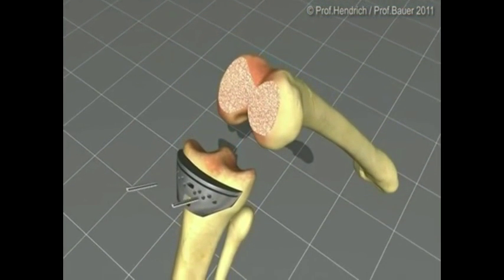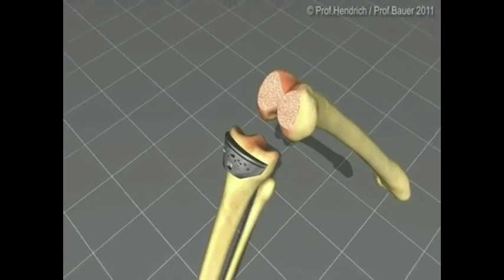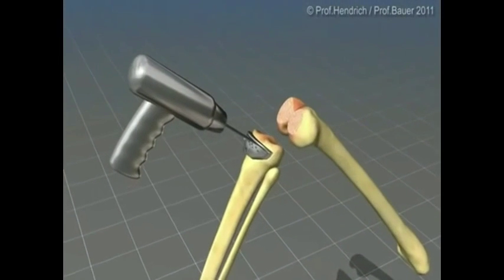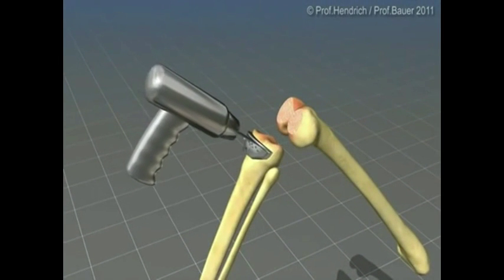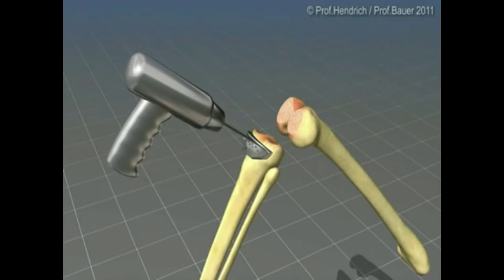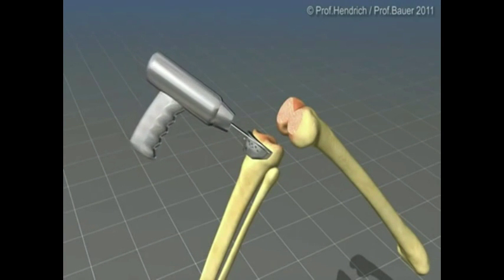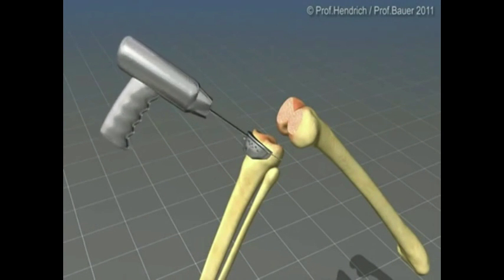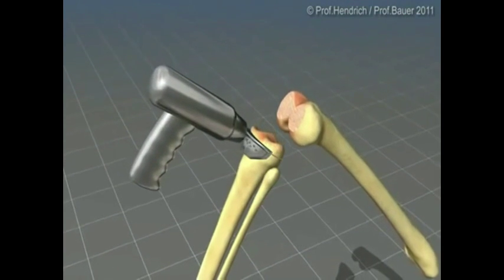The same surgical step is then performed on the tibia. Also here, exactly that amount is taken off the cartilage and bone which is later replaced by the tibial part of the prosthesis.